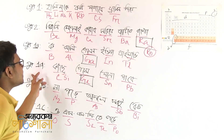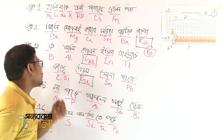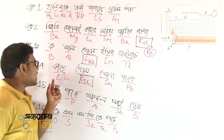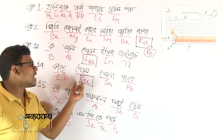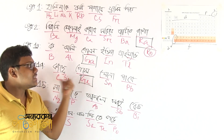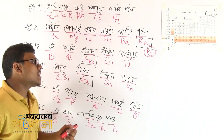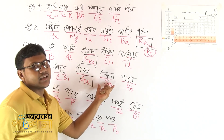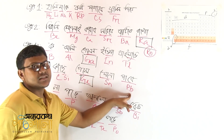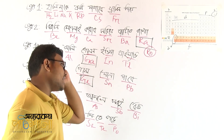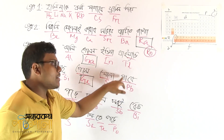Group 14 elements include carbon, silicon, germanium, and plumbum (lead). These all belong to the same group — Group 14.